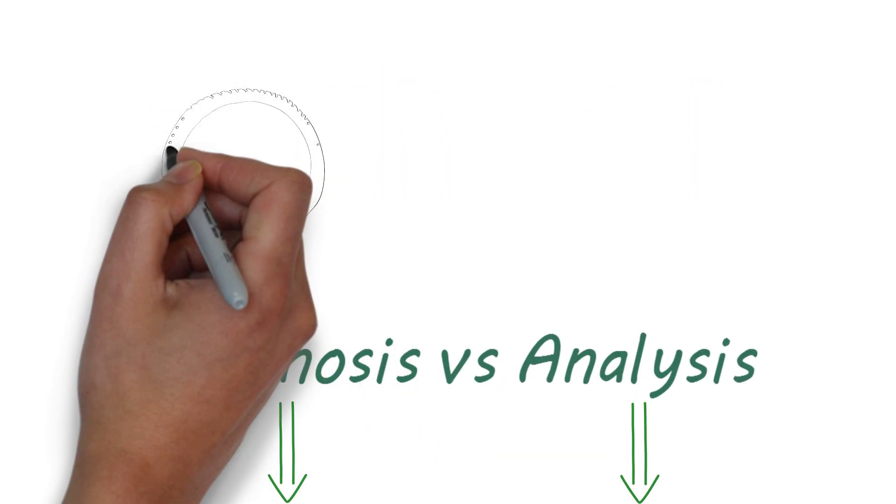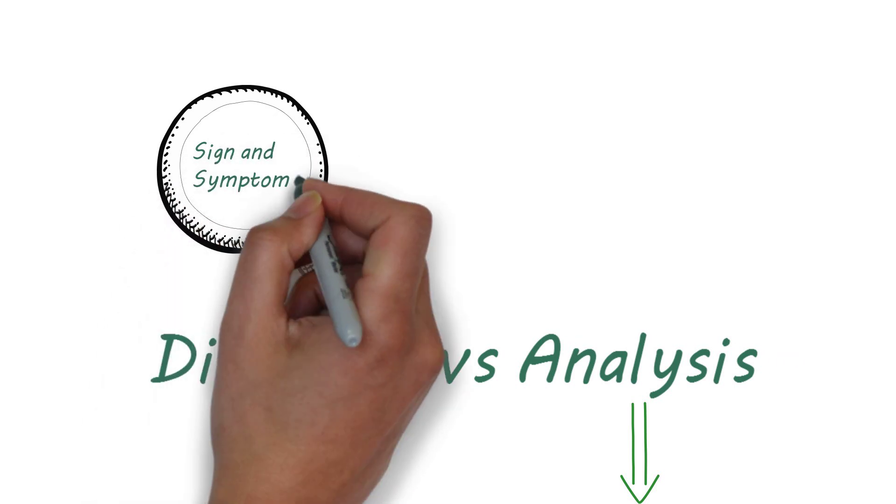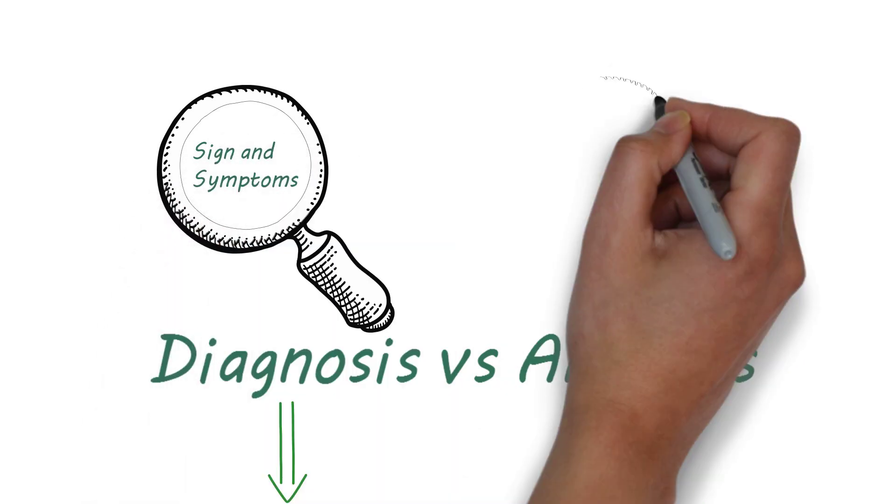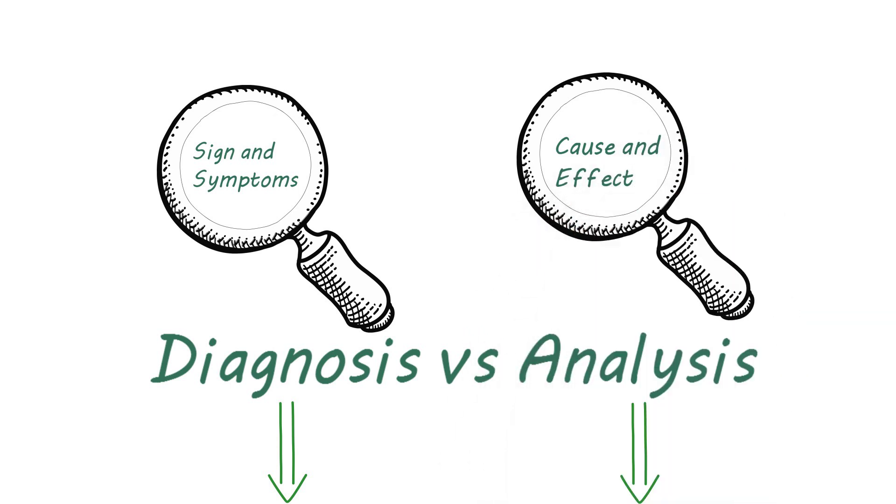Essentially, diagnosis is a guess based on signs and symptoms, whereas analysis is a systematic breakdown to understand cause and effect.